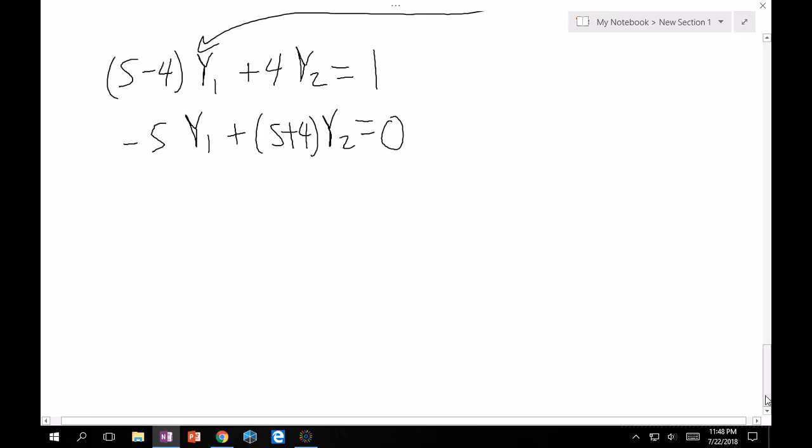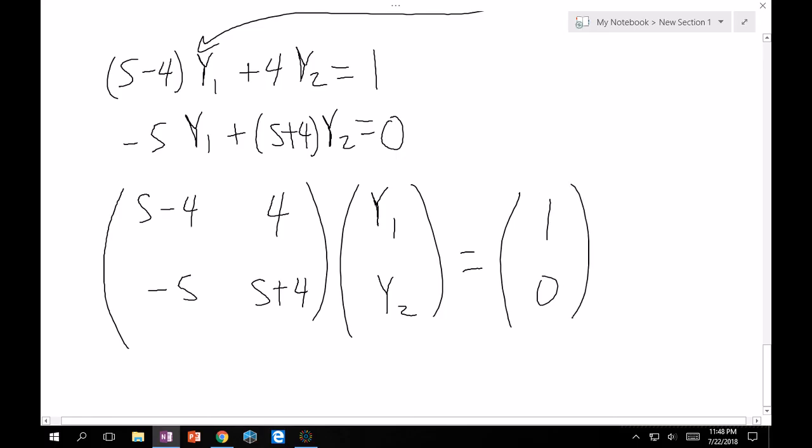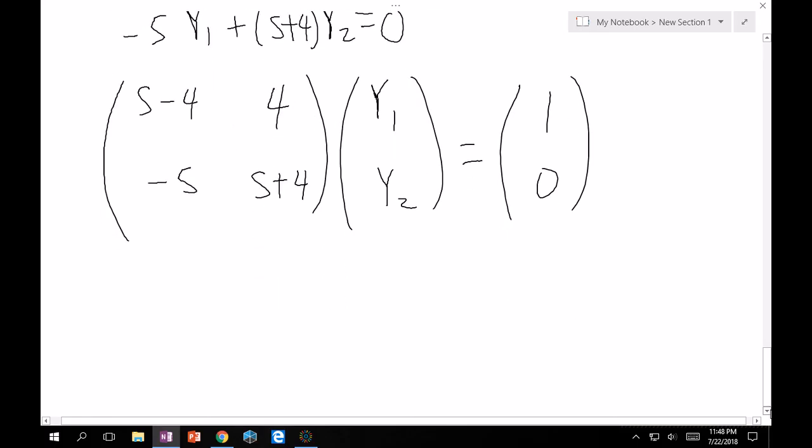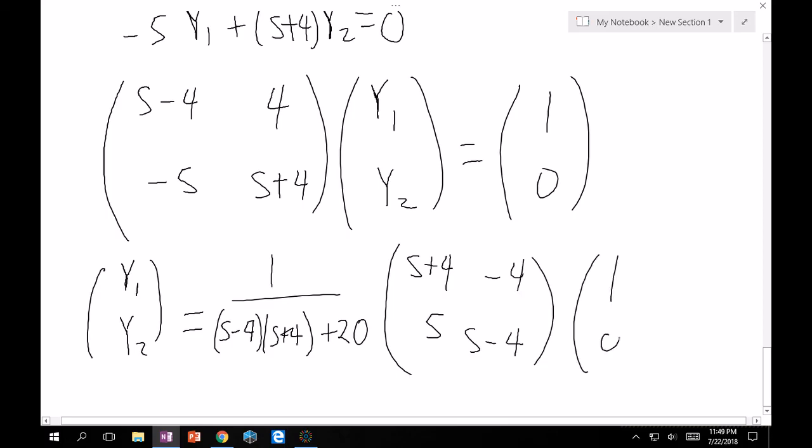Now, I'll rewrite this as a matrix. This is pretty easy to rewrite as a matrix. So, this becomes s minus 4, minus 5, 4, s plus 4, times big y1, big y2, is equal to 1, 0. We want to solve for y1, y2. So what this means, or implies really, is that big y1, big y2, is equal to the inverse of this 2 by 2 matrix multiplied onto the 1, 0. So that's 1 over the determinant, same thing. You just apply what you already know. So s minus 4 times s plus 4 plus 20, multiply it onto, okay, so the first and fourth element switch, so s plus 4, s minus 4, and then you'd negate the other two. So that's minus 4 and 5. Multiply it onto 1, 0.